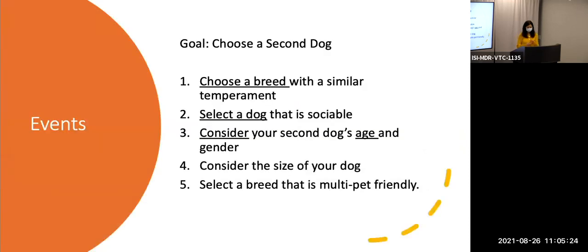If we look at events, they are pretty important to natural language. For instance, if we have some goals like we want to choose a second dog for company, we could have a list of things or events that we have to do in order to accomplish this goal. For instance, we may have to choose a breed that is suitable to our current dog, and we may have to choose its temperament, its age, as well as size. So these are all events that are important to accomplish this kind of goal.